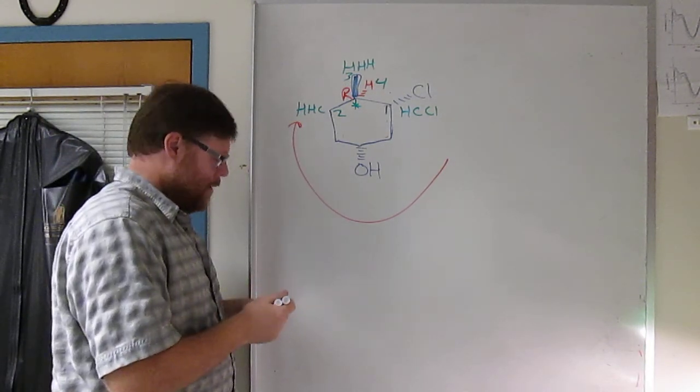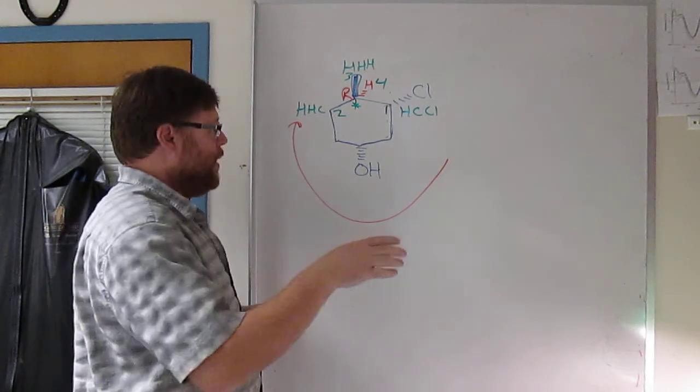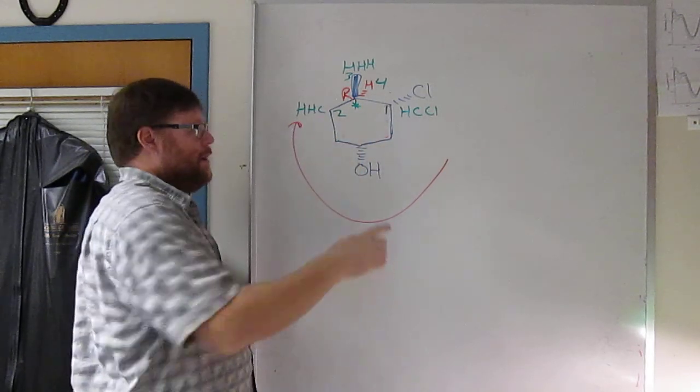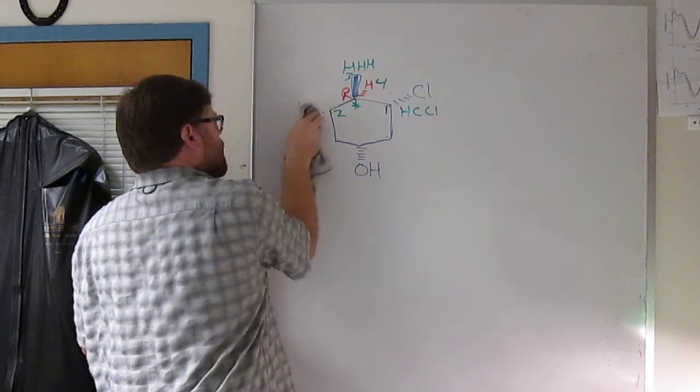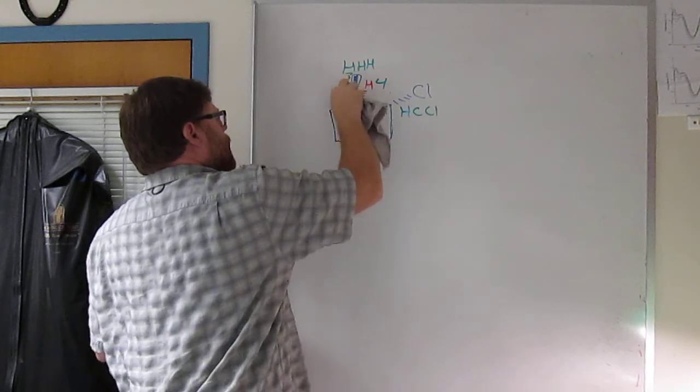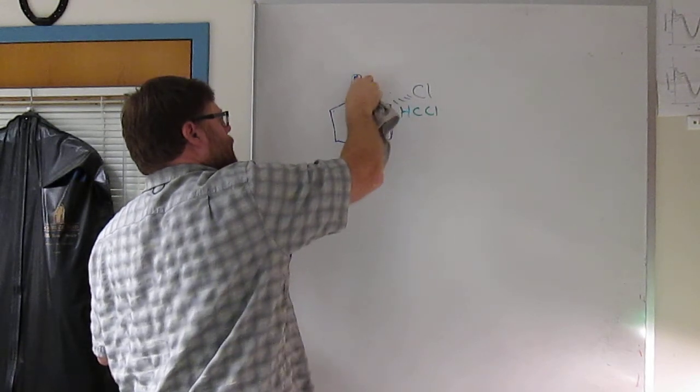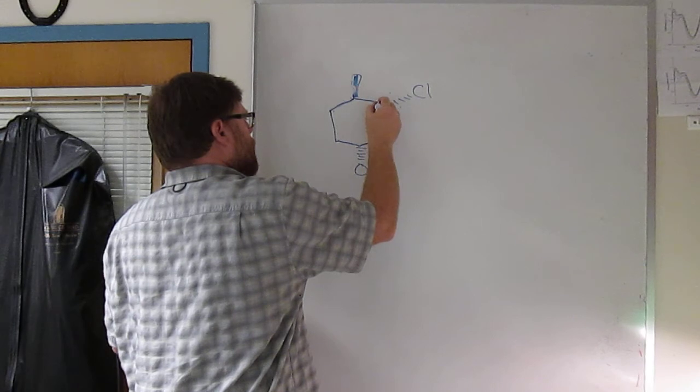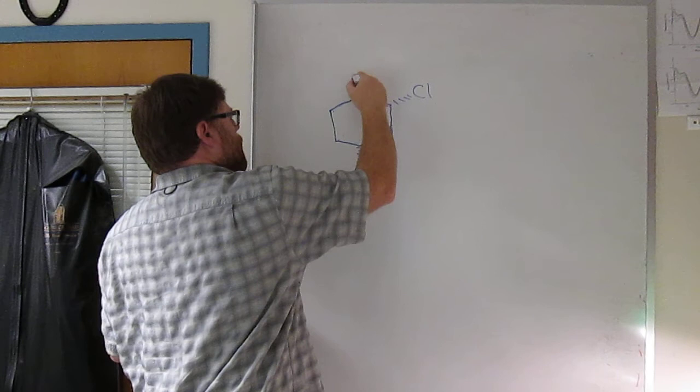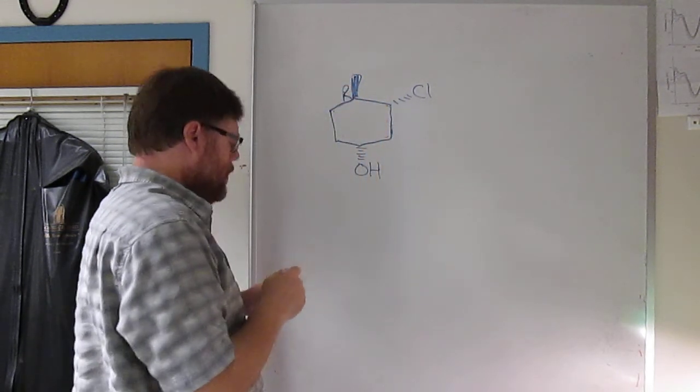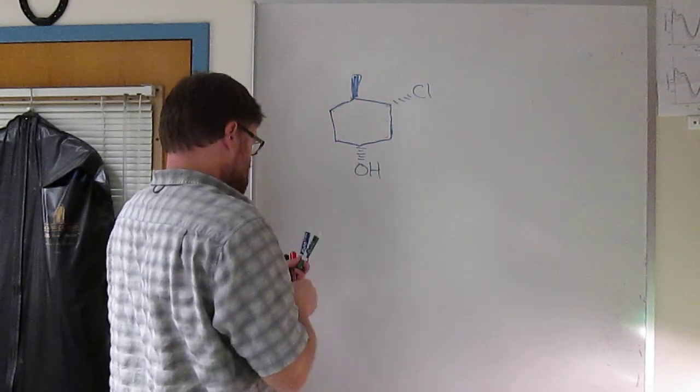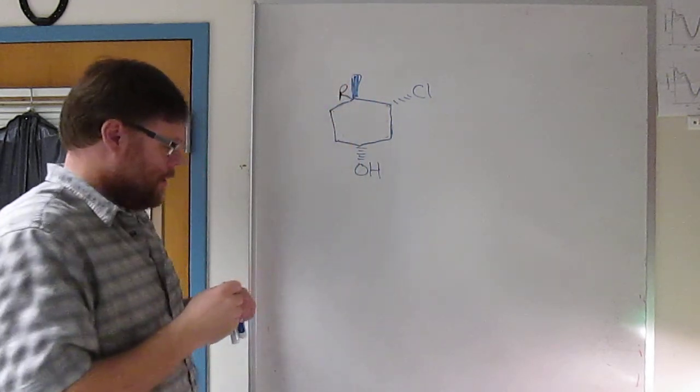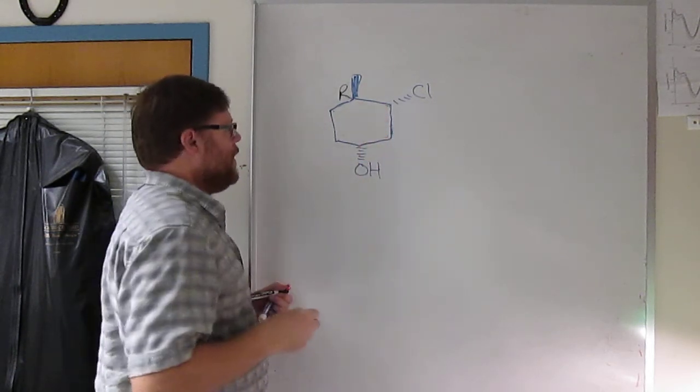Pause and work through that. I'm going to erase all this and do the next carbon, the carbon with the chlorine on it. Hit pause, figure out the absolute configuration R or S at this carbon. Now you're back. We're going to do this carbon—I'm going to put a star by it to indicate that's the one we're doing.